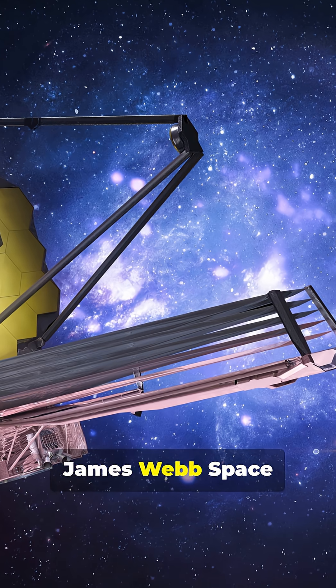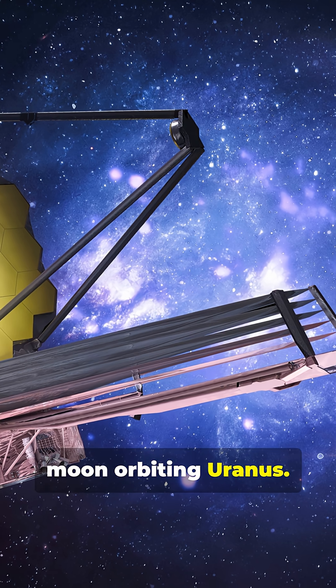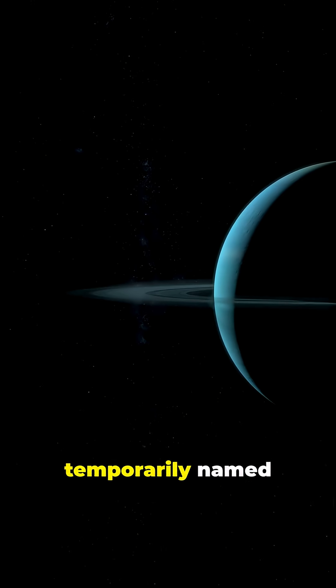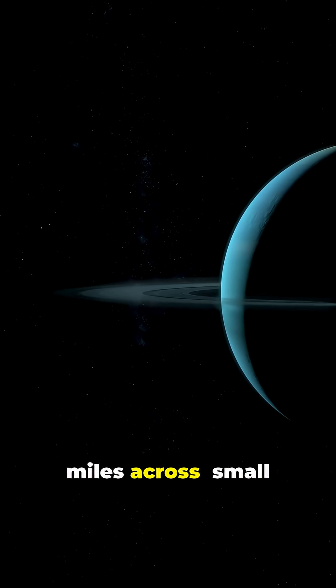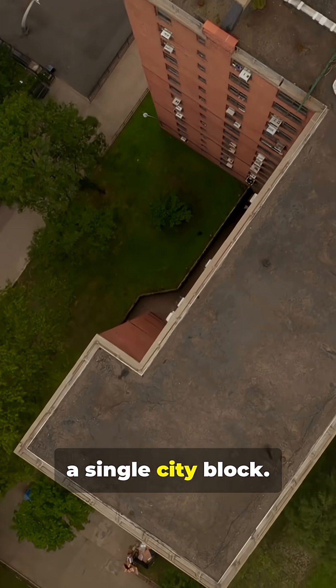NASA's James Webb Space Telescope has spotted a brand new moon orbiting Uranus. This newcomer, temporarily named S2025U1, is only about six miles across, small enough to fit inside a single city block.